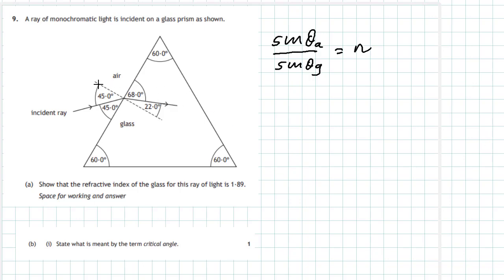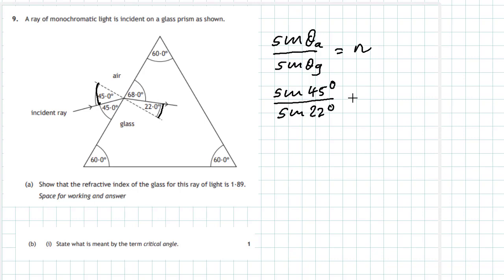We've got to identify the angle of incidence in the air — it's always between the normal and the ray, so it's 45 degrees. So sine of 45 degrees divided by sine of the angle in the glass, which is between the normal and the ray, and that's 22 degrees. Do that in your calculator and we end up with refractive index n equal to 1.89.